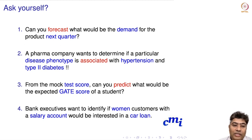The second question is a little tricky. A pharma company wants to determine if a particular disease phenotype is associated with hypertension and type 2 diabetes. It is not a predictive analytics problem. However, we may be interested in using a regression or classification model to figure out if indeed hypertension and type 2 diabetes are associated with the disease phenotype.